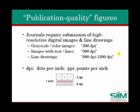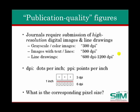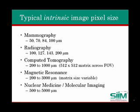For medical images, resolution is typically described with pixel dimension. So, what is the correspondence between resolution in dpi and resolution in pixel dimension? Medical imaging modalities have various detector element dimensions, depending upon the need to render fine detail. For mammography images, dimensions as small as 50 microns are used. Radiography, computed tomography, magnetic resonance, and nuclear medicine imaging have increasingly larger pixel dimensions, and therefore correspondingly lower spatial resolution, as shown in this slide.